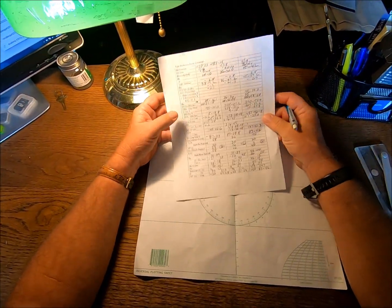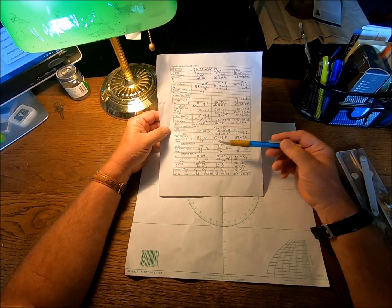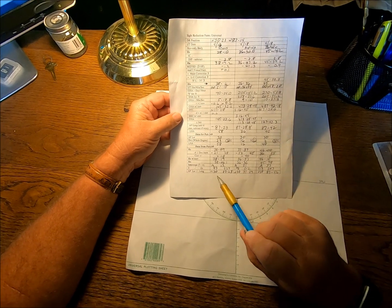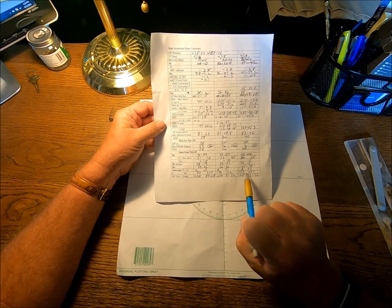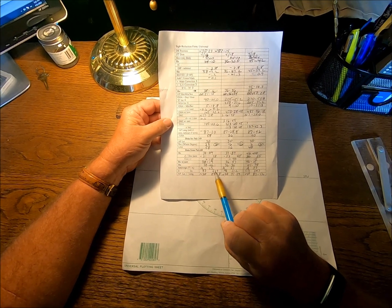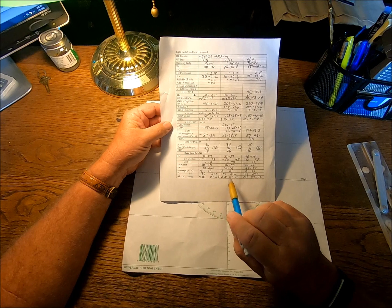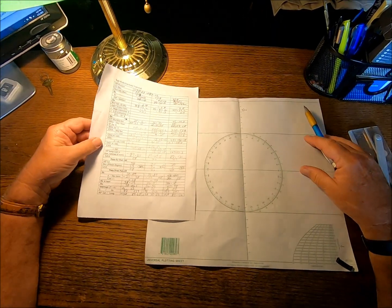Now, to plot, we need three pieces of data from each site, each observation. We need our assumed position, we need our true azimuth, and we need our intercept. And we have all of that right here. So, let's go ahead and get started.